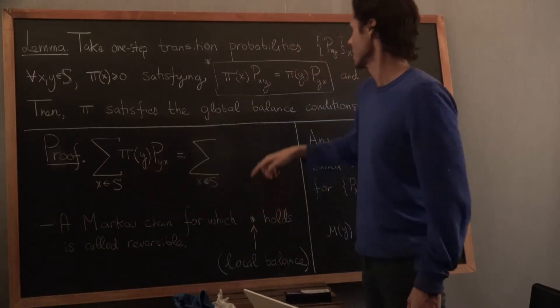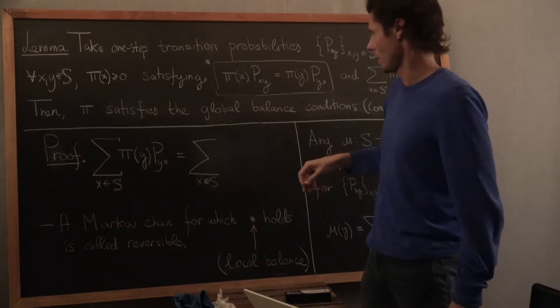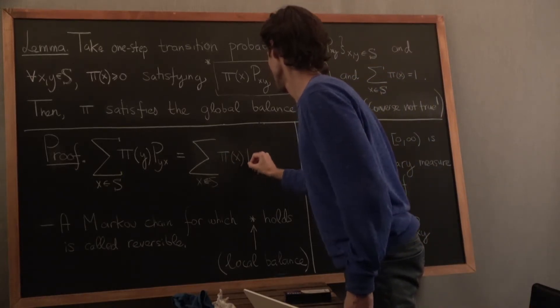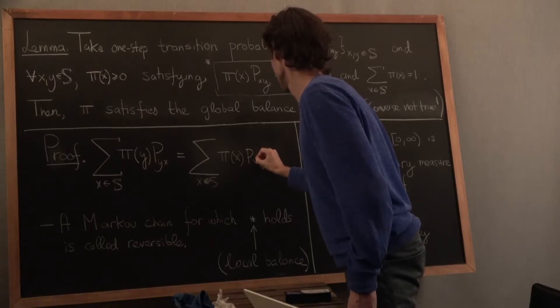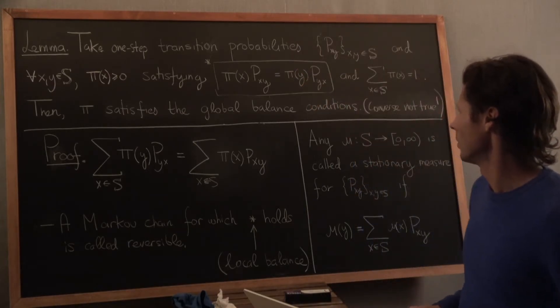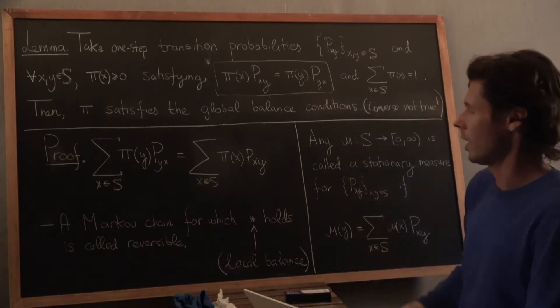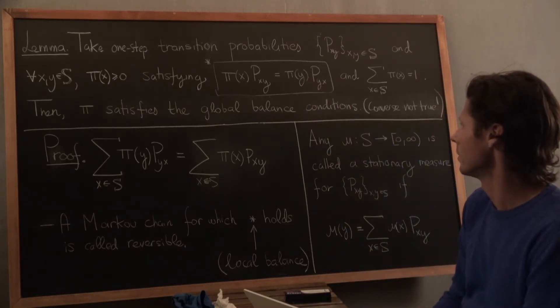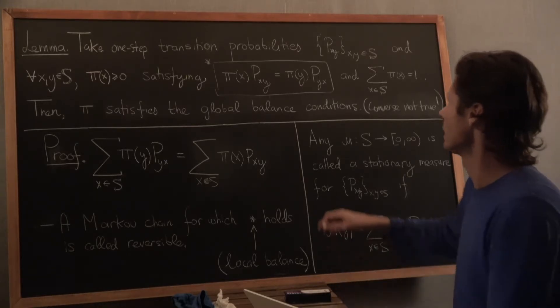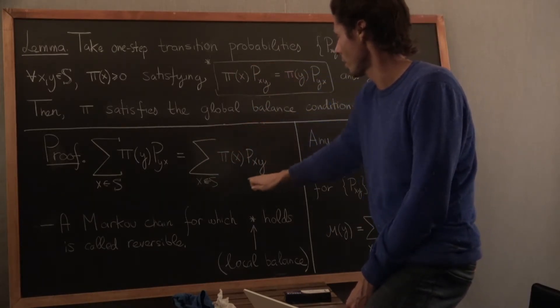So this sum is exactly the same as this one. And because that is equal to this, per pair x, y, I have x, y here. All that's actually happened is that I've summed both sides of this over x. Recognize that this is something that's one of the summands in the global balance condition. And now I have sort of one part of the global balance condition. And the only question is whether that one is equal to pi_y.